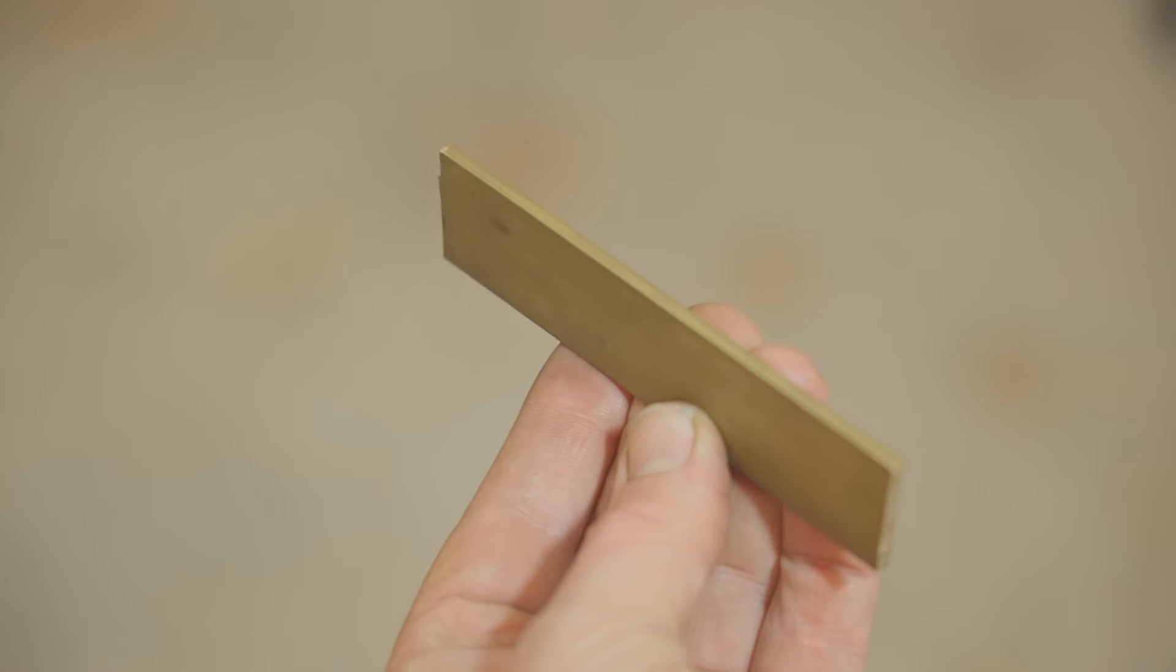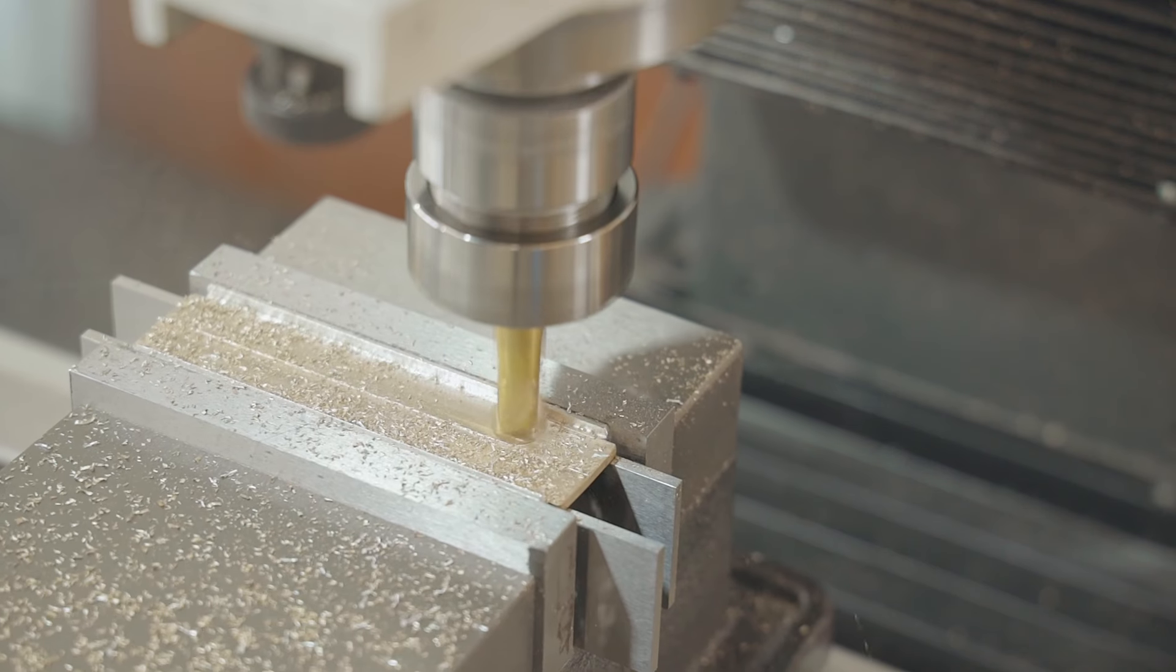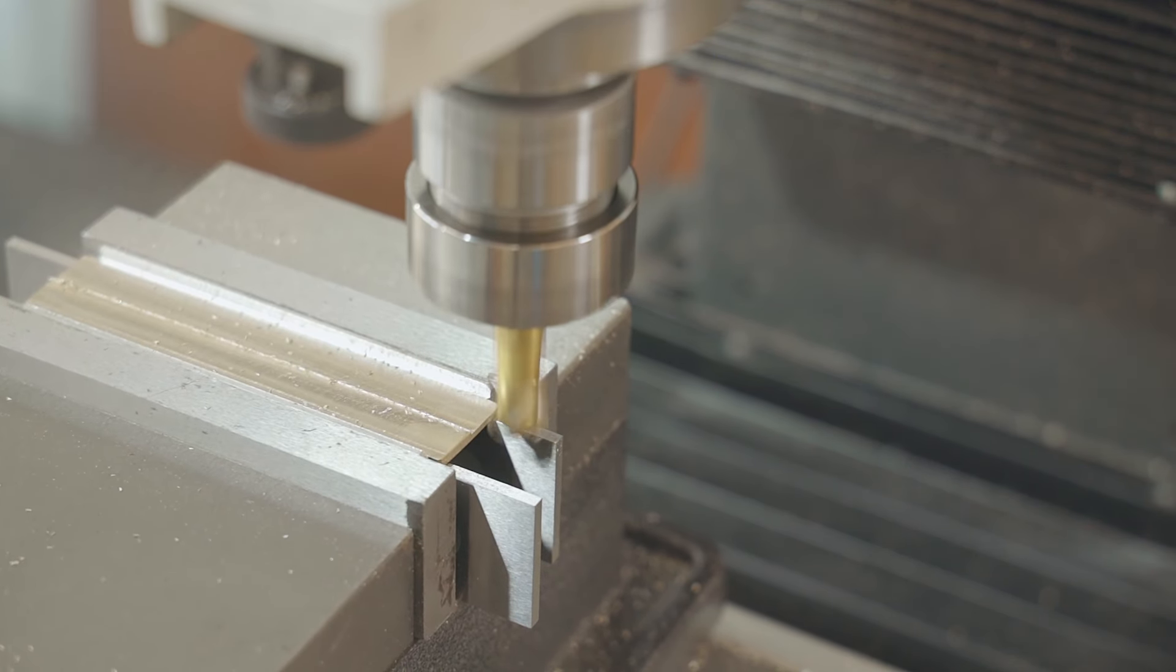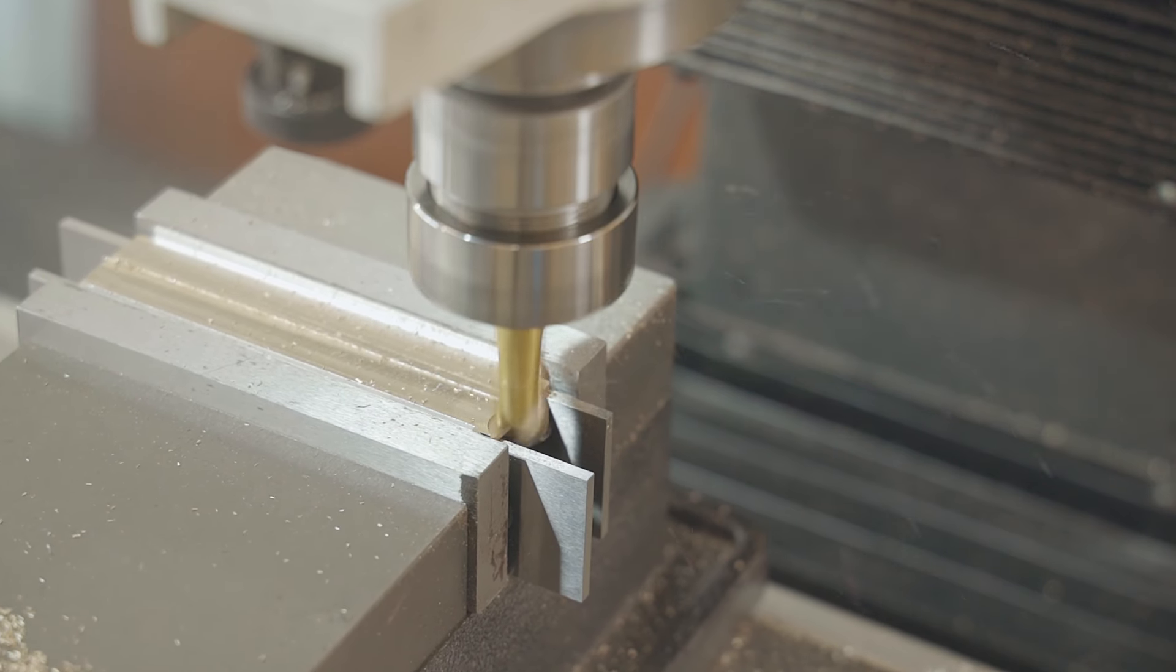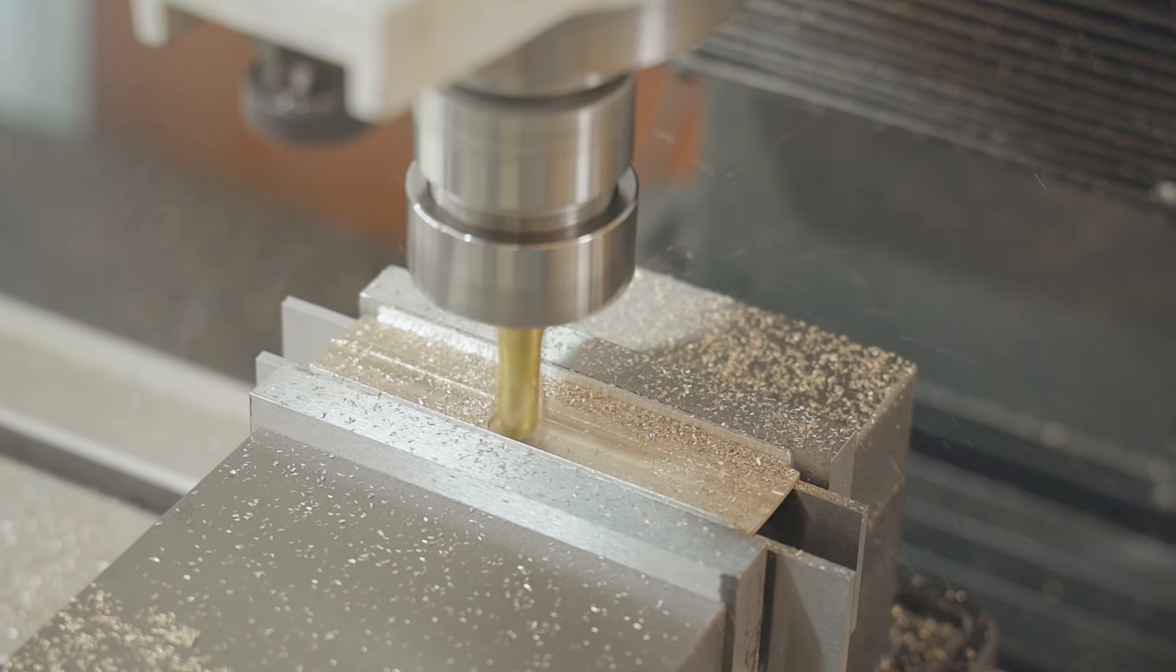It may not be obvious to see but I do have a piece of scrap aluminum inside each of the jaws and I'm just milling into those and not into the jaws.